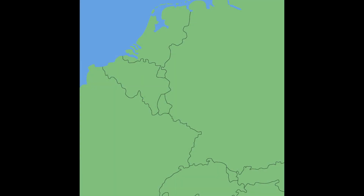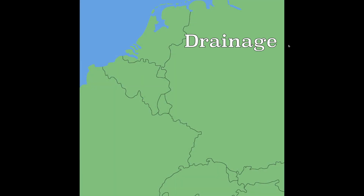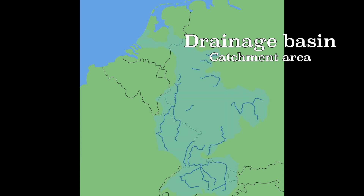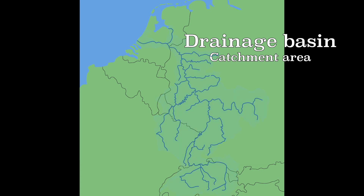A river collects its water in the drainage basin or catchment area. The drainage basin is the entire area where the water is drained at one river. The drainage basin of the Rhine is shown here. Water that has fallen as precipitation can evaporate, be used by nature or used by people. What is left is drained by the river.